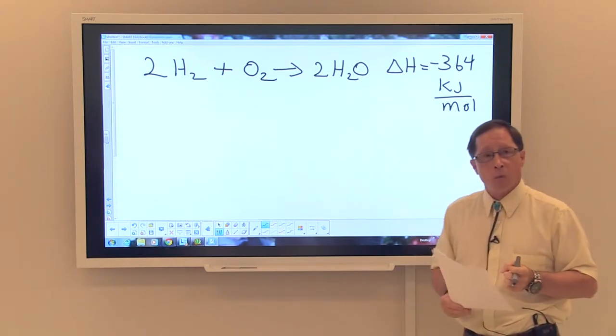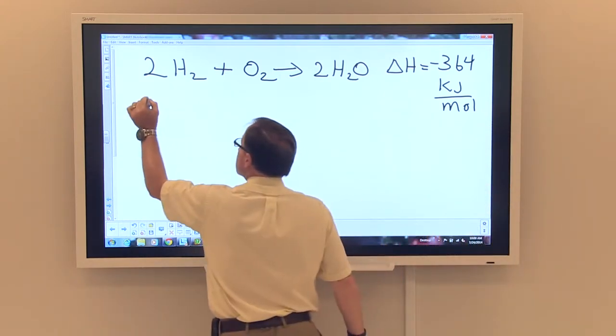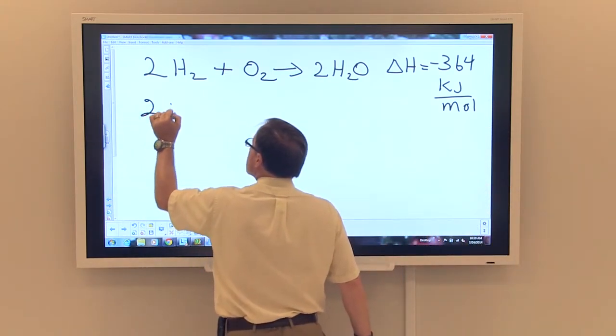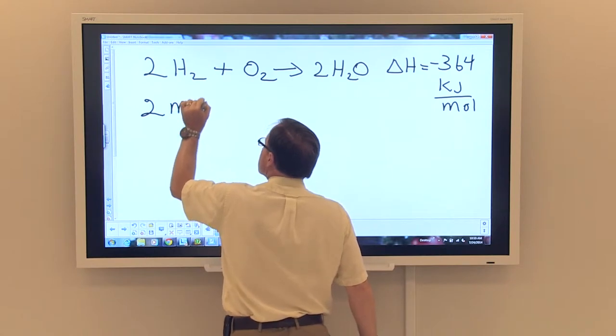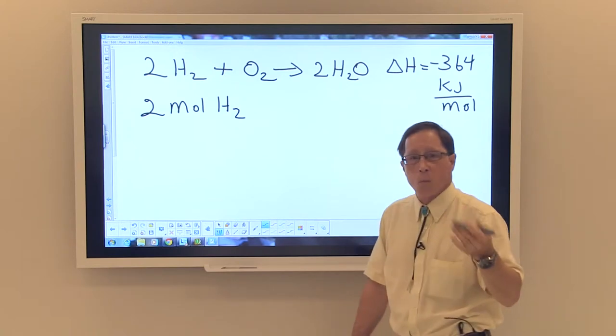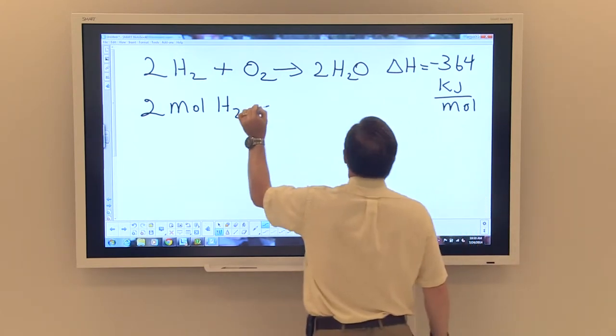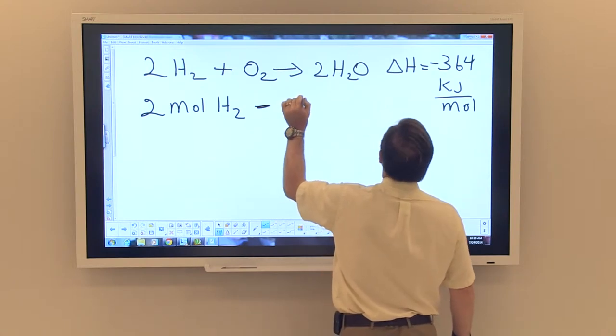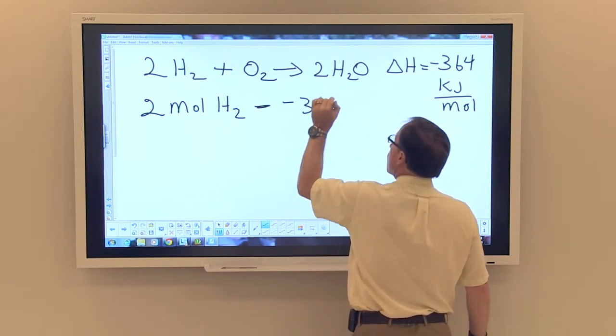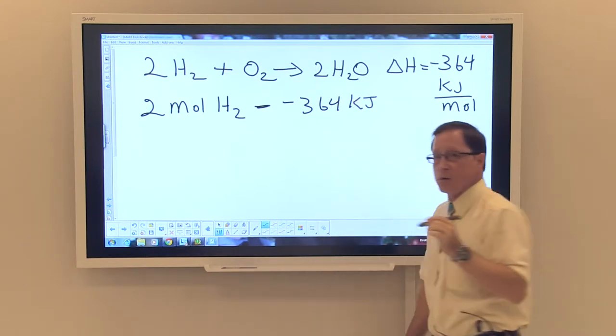How we can write this or say it another way is that two moles of hydrogen would convert or combust to give us negative 364 kilojoules of energy.